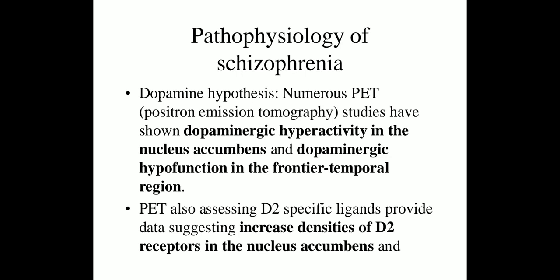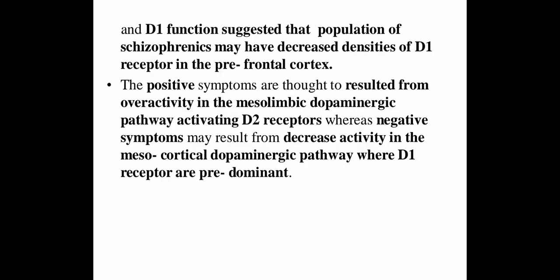The pathophysiology of schizophrenia — the first is the dopamine hypothesis. Numerous PET studies have shown dopaminergic hyperactivity in the nucleus accumbens and dopaminergic hypofunction in the fronto-temporal region. PET studies assessing D2 specifically provide data suggesting increased densities of D2 receptors in the nucleus accumbens. D1 function studies suggest that the population of schizophrenia patients may have decreased densities of D1 receptors in the prefrontal cortex. Positive symptoms result from overactivity in the mesolimbic dopaminergic pathway, activating D2 receptors, whereas negative symptoms may result from decreased activity in the mesocortical dopaminergic pathway, where D1 receptors are predominant.